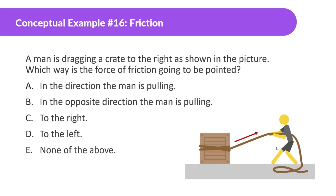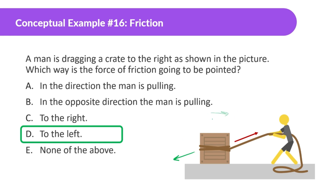A man is dragging a crate to the right. Which way is the force of friction pointed? The answer is to the left. Remember, friction always acts in the opposite direction of motion. So if the crate is moving to the right, friction is going to be going to the left.